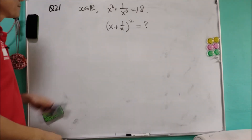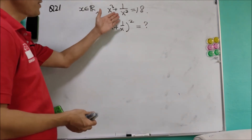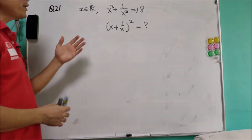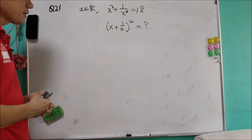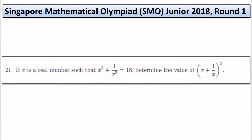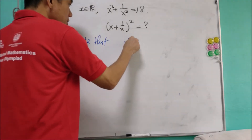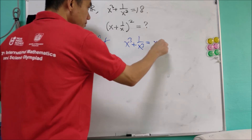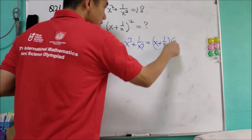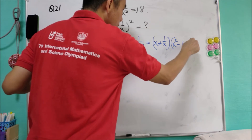Question 21: x is a real number such that x cubed plus 1 over x cubed equals 18. We are asked for the value of (x plus 1 over x) squared. Notice that x cubed plus 1 over x cubed equals (x plus 1 over x) times (x squared minus 1 plus 1 over x squared).